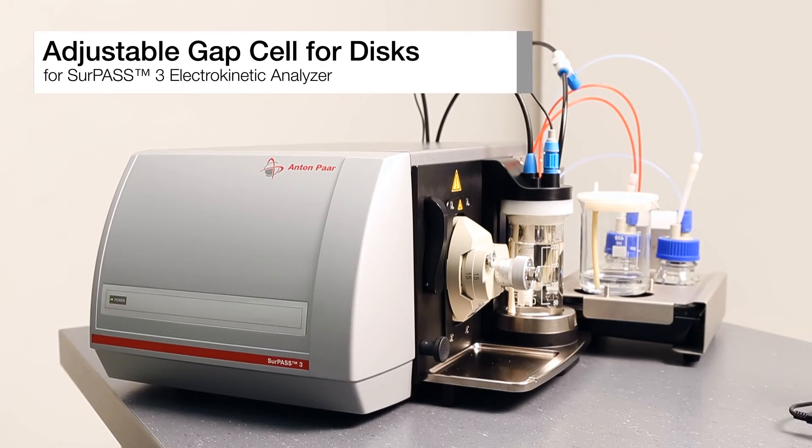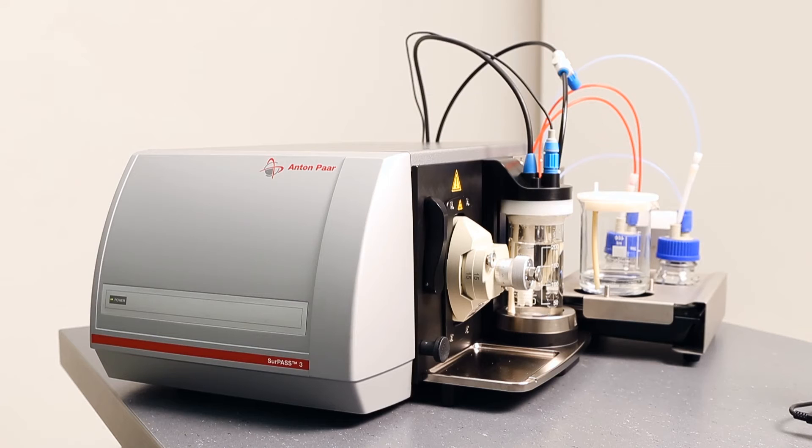This is the adjustable gap cell for discs for the Surpass III electrokinetic analyzer. It's a measuring cell for flexible or rigid planar samples that are available as discs with a certain diameter.